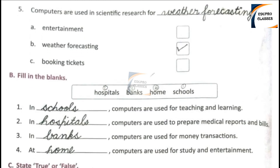Question B: Fill in the blanks. Choose the right words from the box for each sentence. Number 1: In blank, computers are used for teaching and learning. Right answer: Schools.